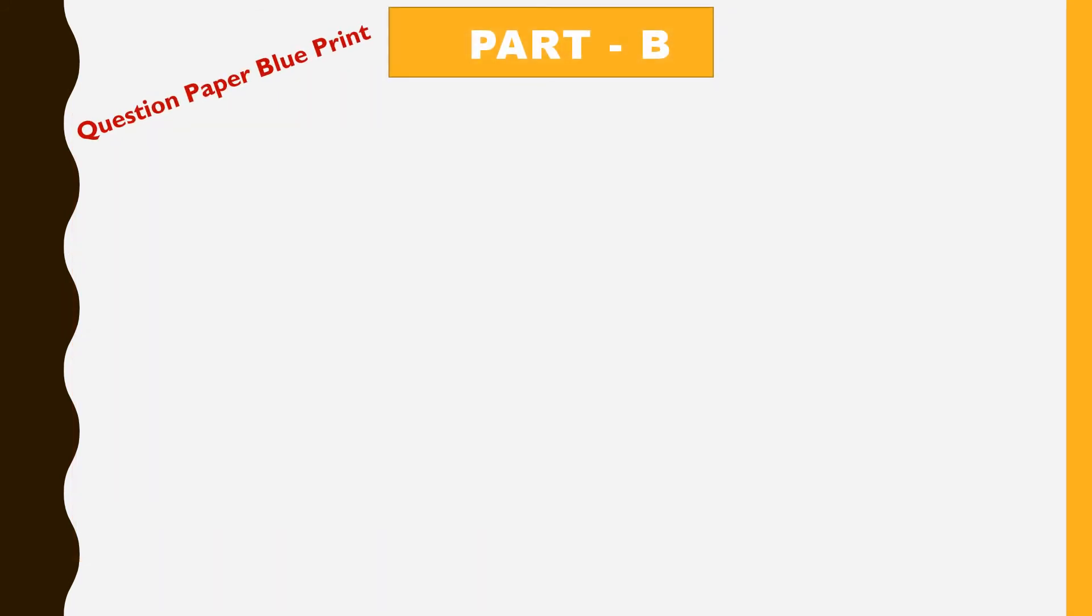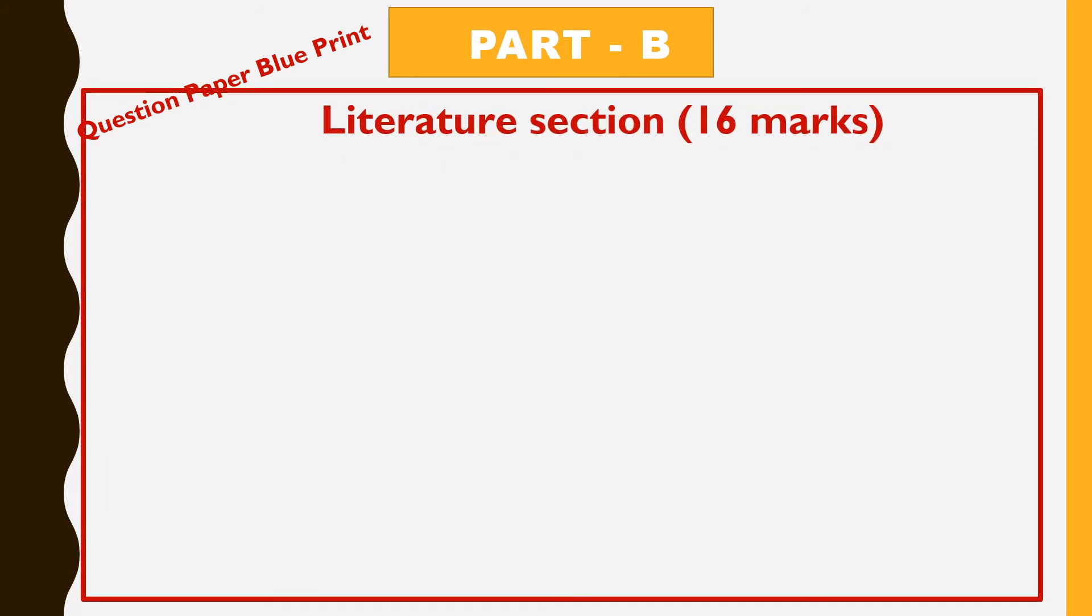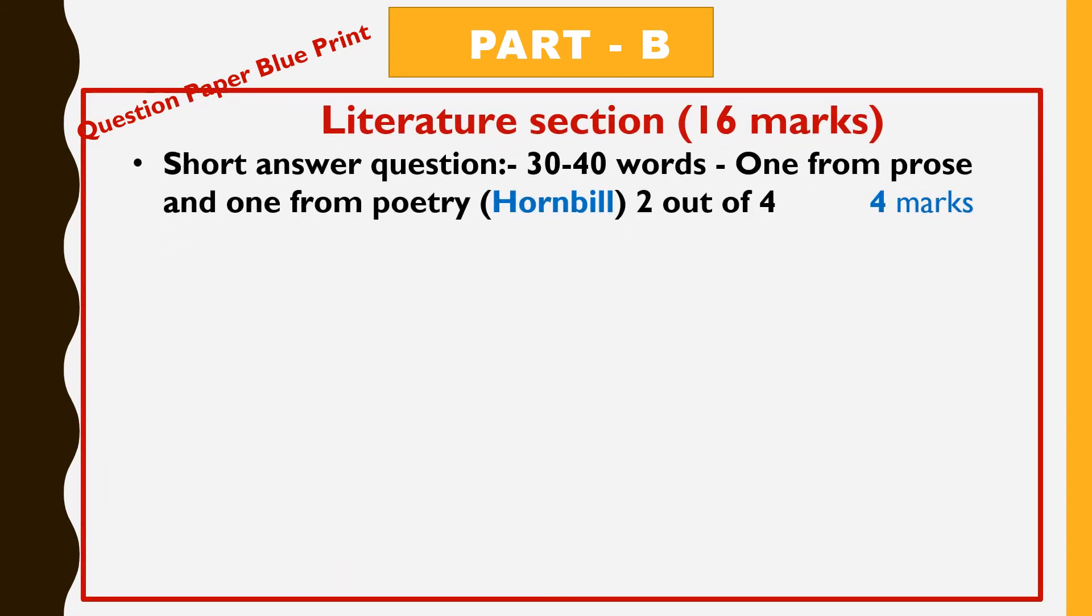Third section is literature and it is for 16 marks. In question 6, you will get 2 short answer type questions from prose and 1 from poetry from the book Hornbill. And out of 4 questions, you have to attempt 2 in 30-40 words. And it carries 4 marks.